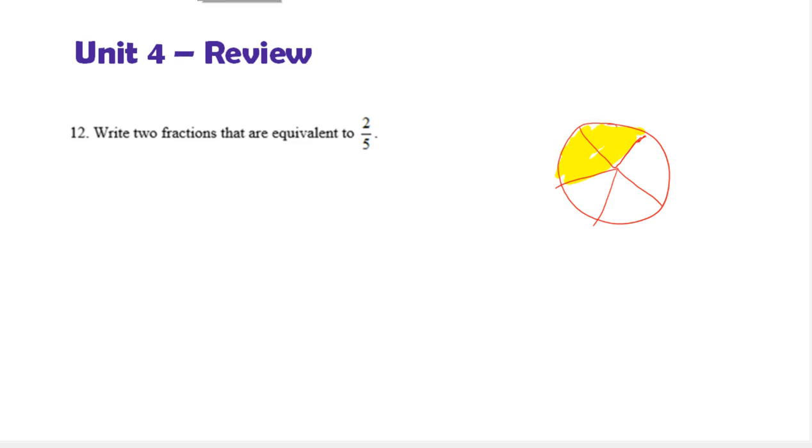What you want to do to find an equivalent fraction is cut it into more pieces, but they have to remain the same size. What if I cut all of them in half? Notice now there's 2 times as many pieces. There's 10. And now 4 of those pieces are shaded, which is 2 times 2. I am going to multiply both the numerator and the denominator by 2, and I get the fraction 4 tenths, which is equivalent to 2 fifths.